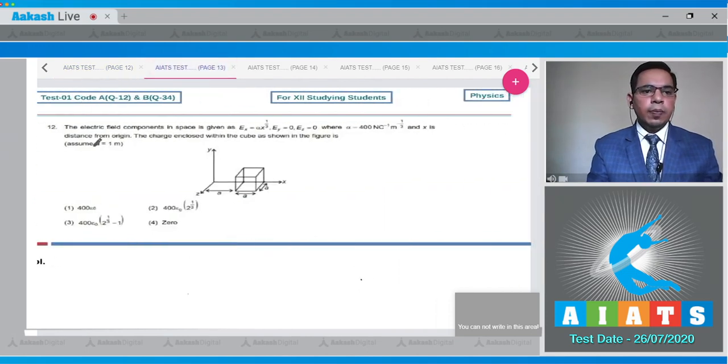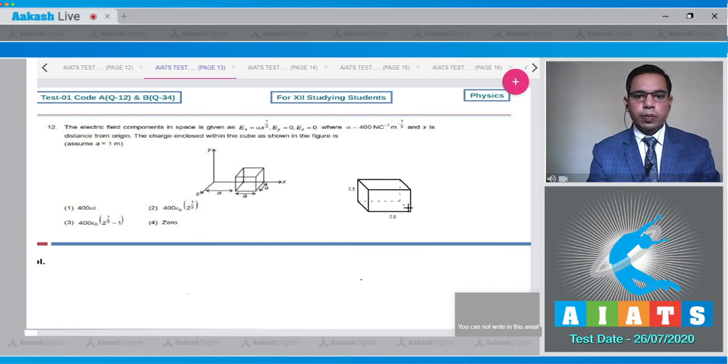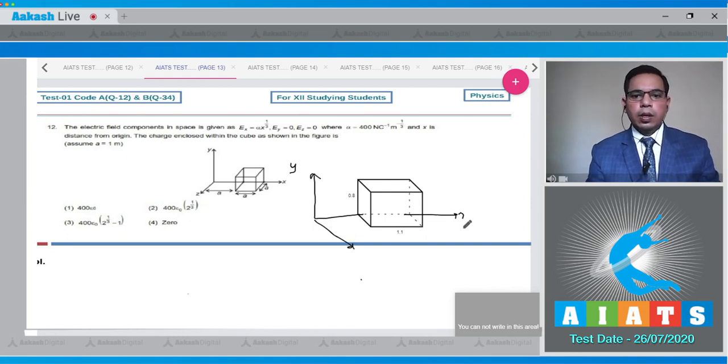Now move to question number 12, which states that the electric field components in space are given as e_x equal to alpha x to the power 1/3, e_y and e_z are 0, where alpha equals 400 in SI units and x is distance from the origin. The charge enclosed within the cube as shown in the figure is, assume a equal to 1 meter. Just consider the situation that there is a cube. This is the y axis, this is the x axis, and this is the z axis. This distance is a and this distance is also a. Now a equals 1 meter is given.